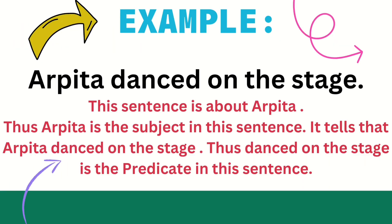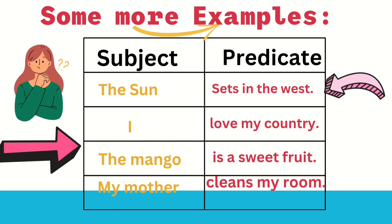Example: Arpita dances on the stage. This sentence is about Arpita — Arpita is the subject. It tells us that Arpita dances on the stage. 'Dances on the stage' is the predicate in this sentence.